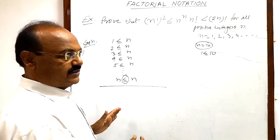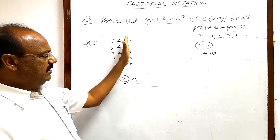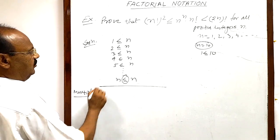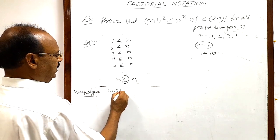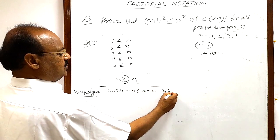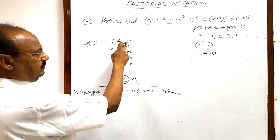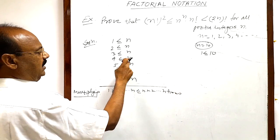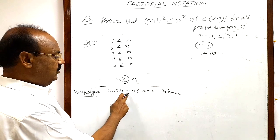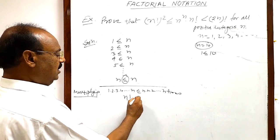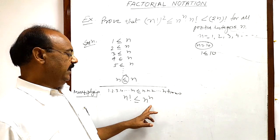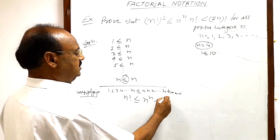Now multiplying the corresponding sides — multiplying all left-hand sides together and all right-hand sides together. On the left we get 1 · 2 · 3 · 4 ··· n, which is nothing but n!. On the right, we have n multiplied n times, which is nⁿ. So we get n! ≤ nⁿ. Let us call this Relation 1.